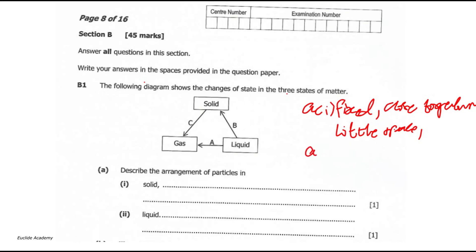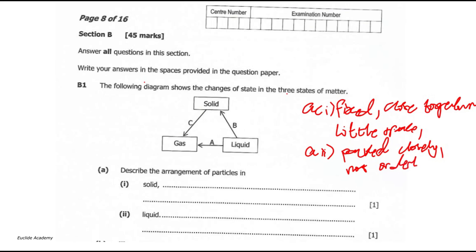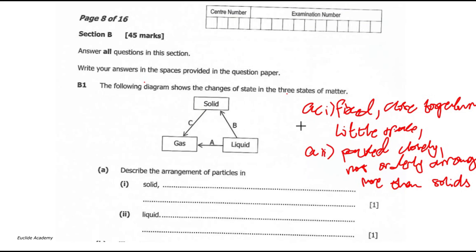For A2, the particles in a liquid are packed closely together, but they are not orderly arranged as they are in a solid. They have little spaces in between them, but those spaces are more than in solids. Any of these points should be sufficient for the answer.